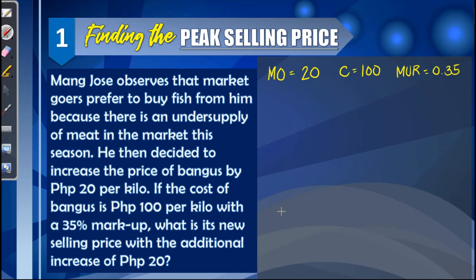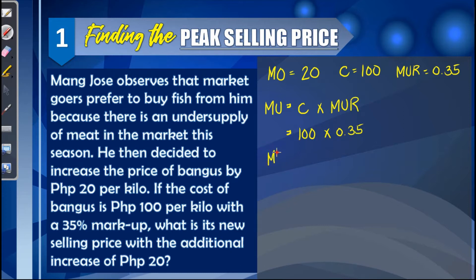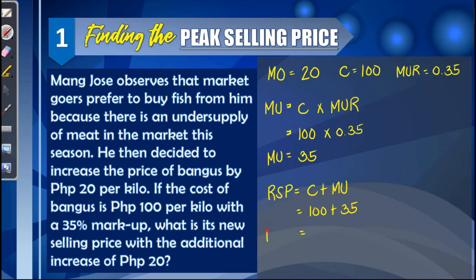Before we can find the peak selling price, we need to know the markup. The markup is given by the cost times the markup rate. So we multiply 100 and 0.35 to get the markup which equals 35. With this value, we can now find the regular selling price, which equals the sum of the cost and the markup: 100 plus 35, giving us a regular selling price of 135 pesos per kilo.